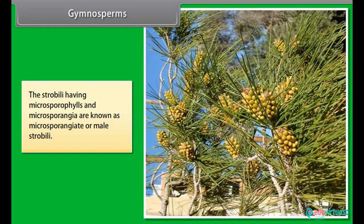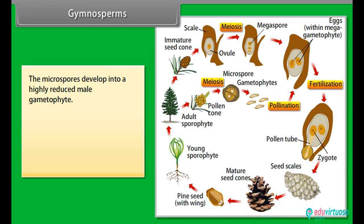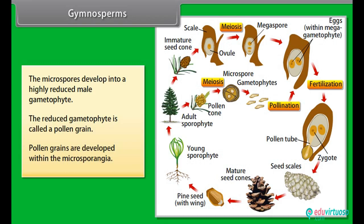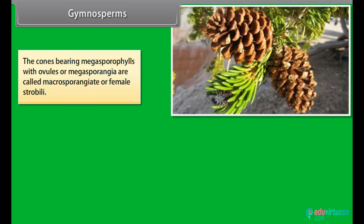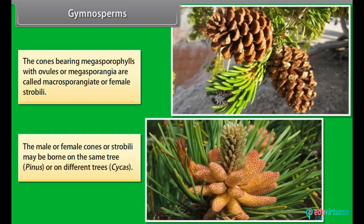The strobili having microsporophylls and microsporangia are known as microsporangiate or male strobili. The microspores develop into a highly reduced male gametophyte called a pollen grain. Pollen grains are developed within the microsporangia. The cones bearing megasporophylls with ovules or megasporangia are called macrosporangiate or female strobili. The male or female cones may be borne on the same tree, as in pinus, or on different trees, as in cycas.